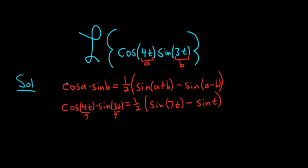So again, we add to get 7t and subtract to get t. At this point we can distribute the one-half, giving us one-half sine of 7t minus one-half sine of t.